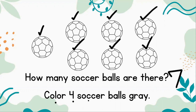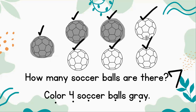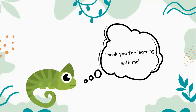Color four soccer balls gray. Okay students, I want you to count with me — this is our last one. Are you ready? Here we go: one, two, three, and four. Good job, excellent counting. We have a total of four gray soccer balls and three white soccer balls, which makes our total seven soccer balls.